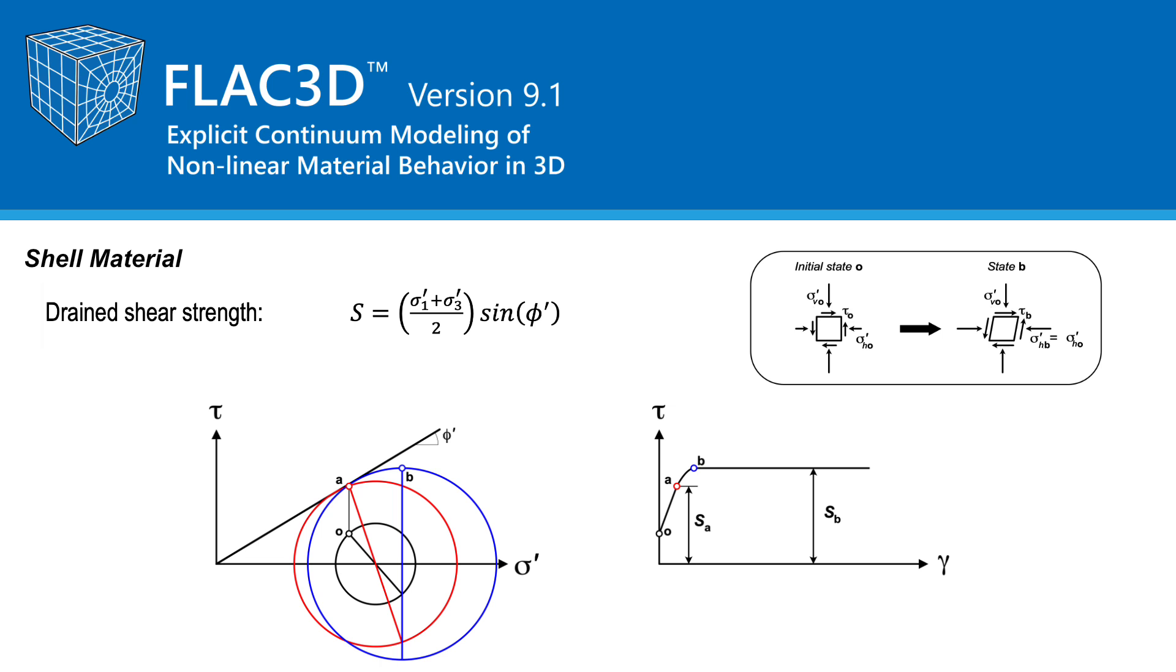The equation S equals the maximum principal effective stress plus the minimum principal effective stress divided by 2 times the sine of the drained friction angle represents the radius of the Mohr circle at initial yield, that is the red circle, with elastic response under simple shear loading with shear stress SA, a state of stress slightly lower than that which includes the impacts of principal stress rotation.